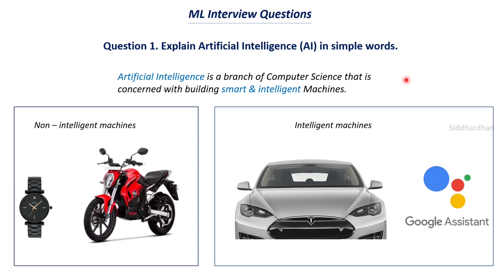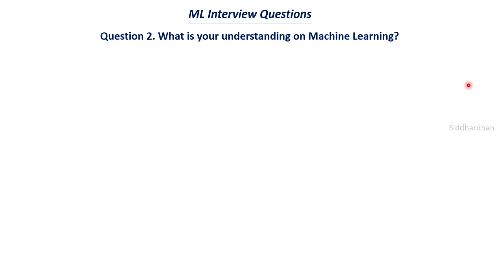When answering these kinds of questions in an interview, it is very advisable to give examples like this, because it shows you have a clear understanding of the concepts and helps the interviewer know how deeply you understand them. I'm not asking you to give the exact answer — give something like this, add your own words and your own interesting examples. I'm just giving you a blueprint of how to answer these questions. The next question is: what is your understanding on machine learning? A lot of people don't have a clear understanding of the difference between artificial intelligence and machine learning.